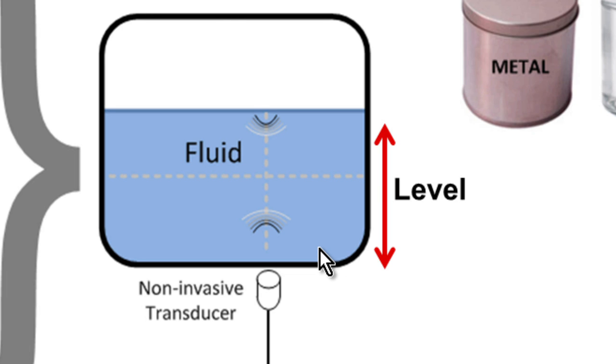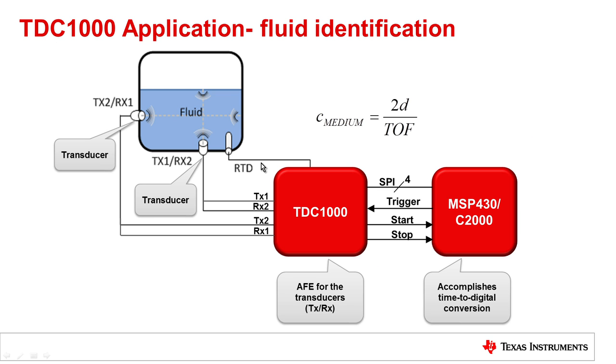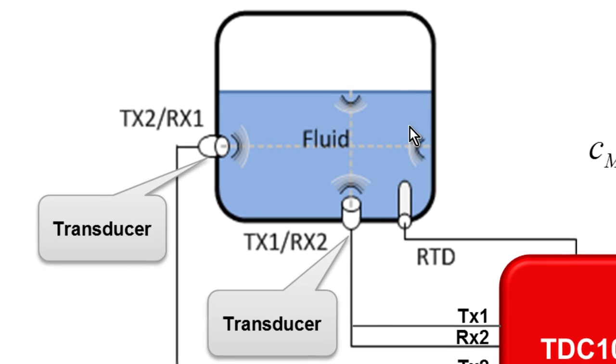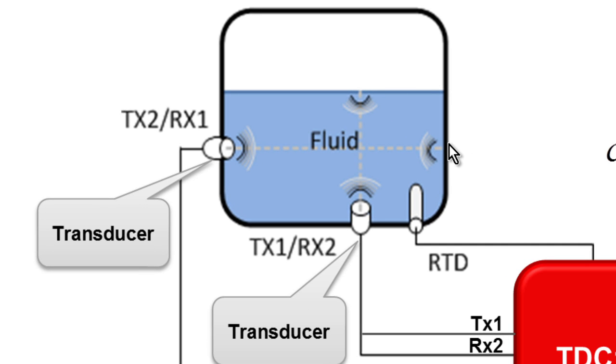The other application we can handle right now with pulse echo is fluid identification. Fluid identification is the same topology as a level. The only difference is I've moved my transducer from the bottom to the side.